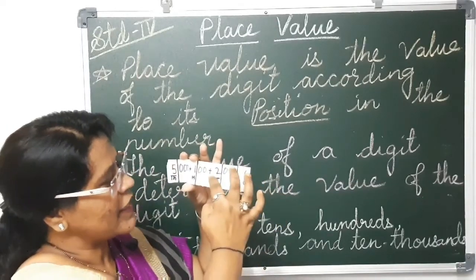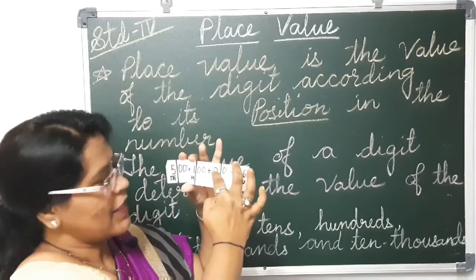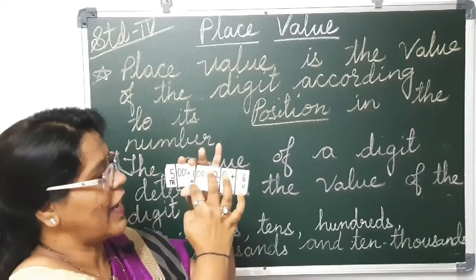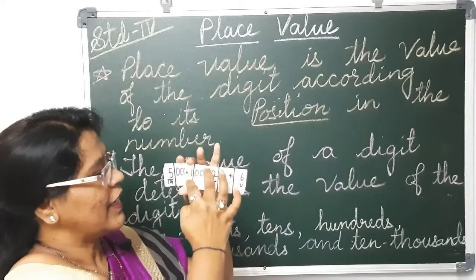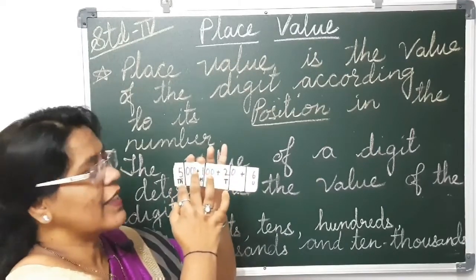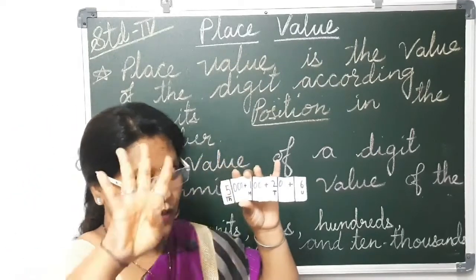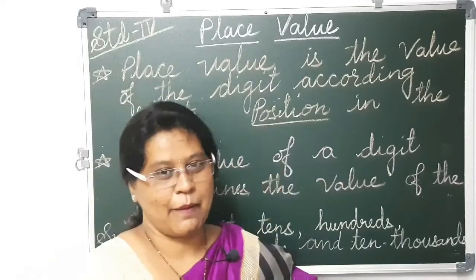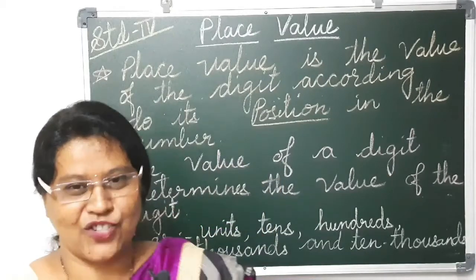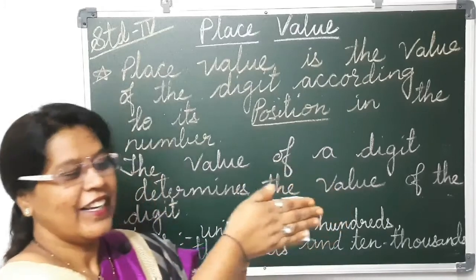So 6 is in units — that is 6. 2 is in tens — that is 20. 1 is in hundreds — that is 100. 5 is in thousands — so it is 5,000. It is a 4 digit number. One more magic! In this class you are going to learn till 5 digits.